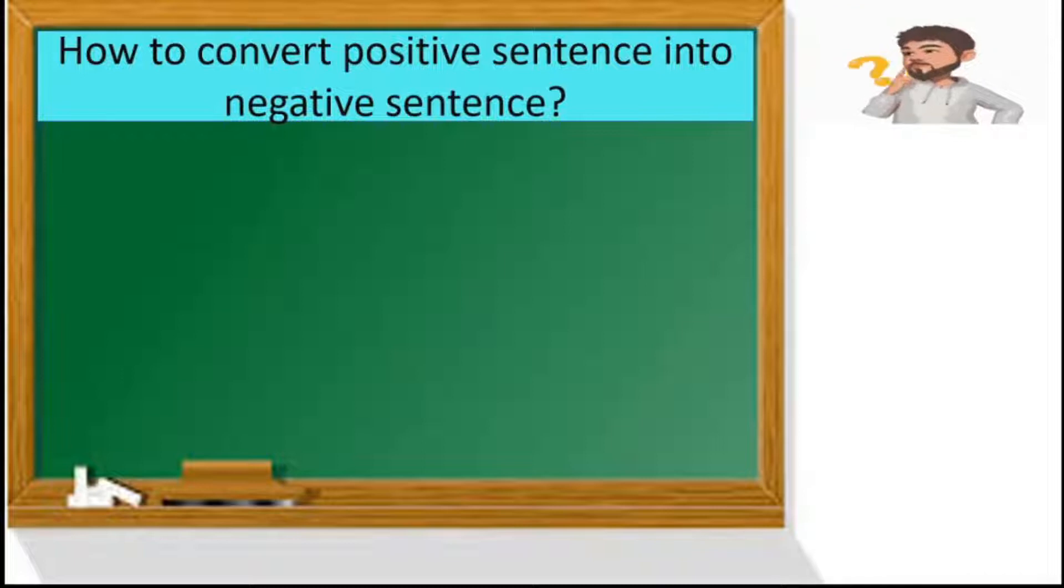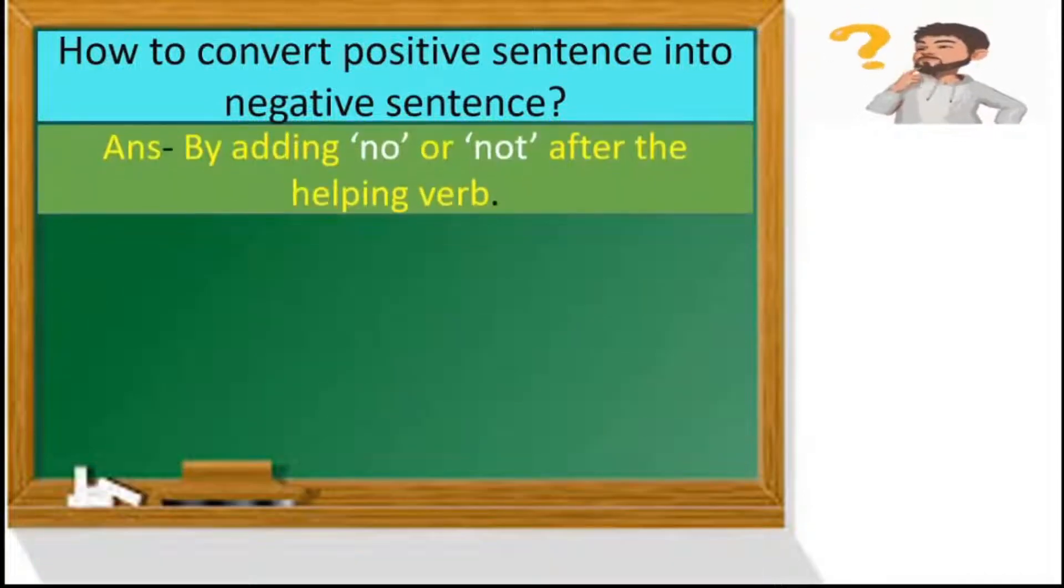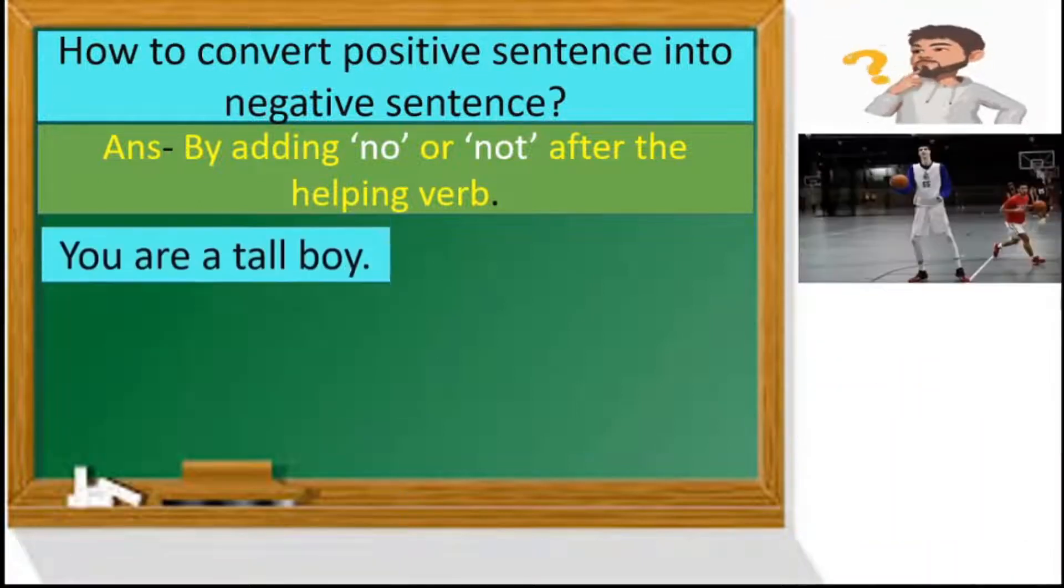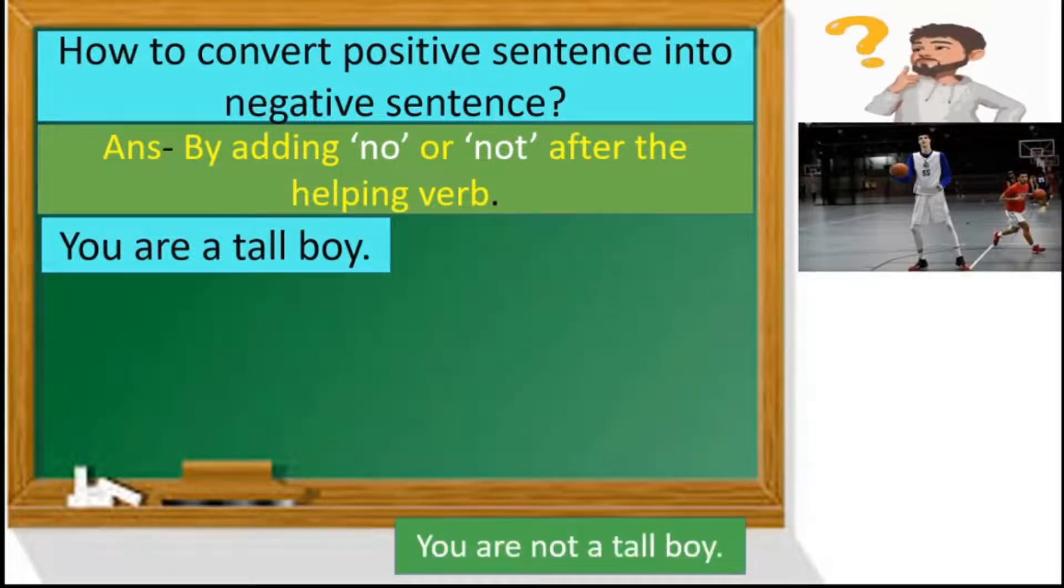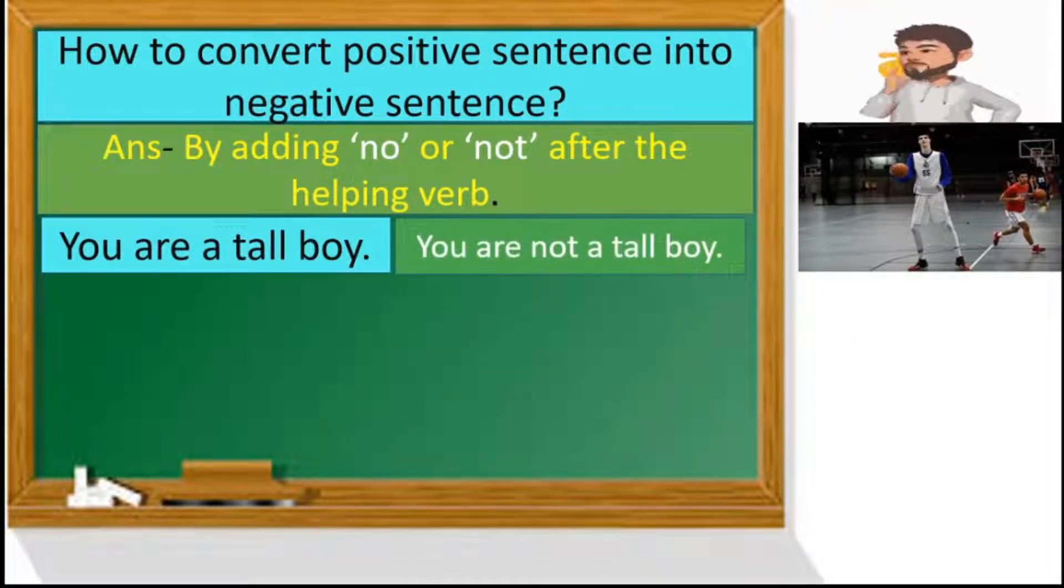How to convert positive sentences into negative sentences? Children, we can convert positive sentences into negative sentences by adding no or not after the helping verb. For example, you are a tall boy. You are not a tall boy.